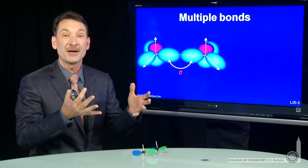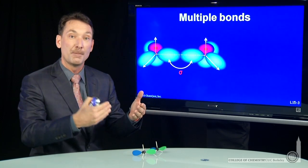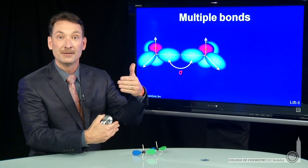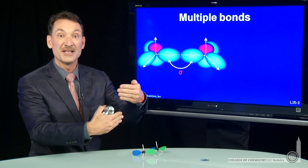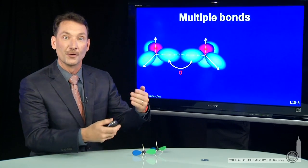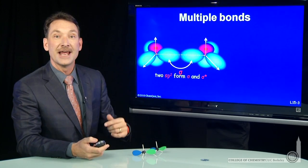Those two atomic hybrid orbitals will form a sigma bonding and antibonding molecular orbital. So two atomic orbitals, both of them sp2, form two molecular orbitals, a sigma bonding and antibonding orbital.